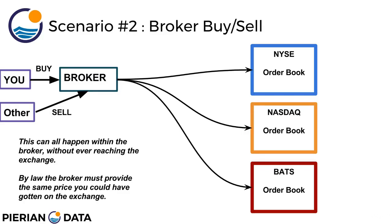Now scenario number two — a broker buy/sell — is a little more realistic. Your broker doesn't just have you as their client; they may have other clients. And what happens all the time is that you want to buy stock and your broker has another client who wants to sell the same stock. So the entire matching process happens inside the broker without ever actually reaching the exchange. However, keep in mind that by law — at least in the United States — the broker must provide the same price you could have gotten on the exchange.